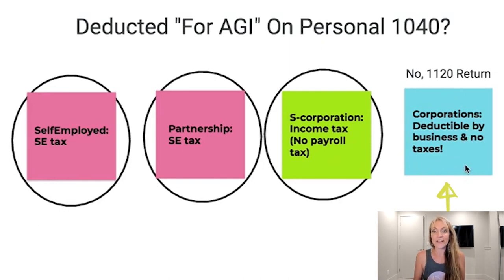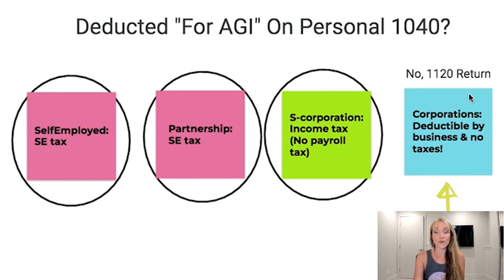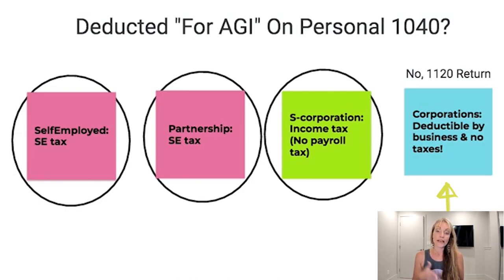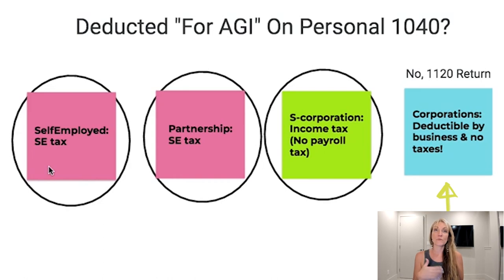In the corporation, the business must set up the plan and can pay for shareholders' and employees' health insurance and deduct it — and it is not included in the owner's income. Corporations generally aren't very popular, and I wouldn't let this alone be a reason to form one. In the past, partnerships and self-employed people used to be able to deduct their health insurance for self-employment taxes as well, but that deduction was removed about 10 years ago.